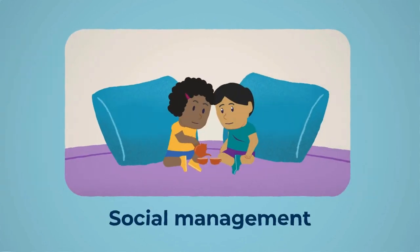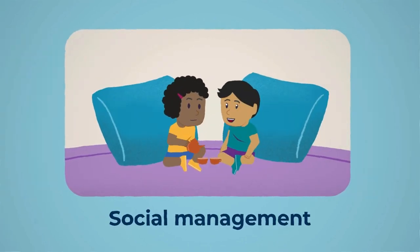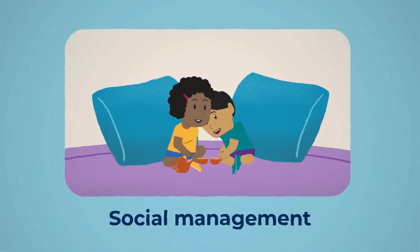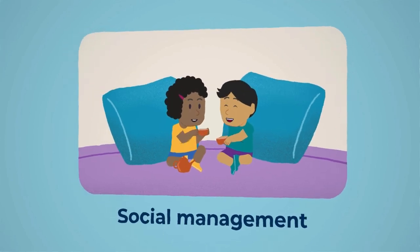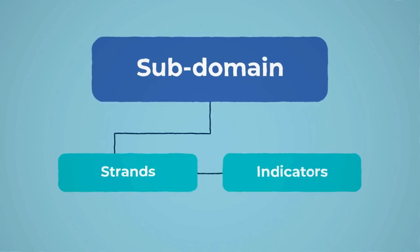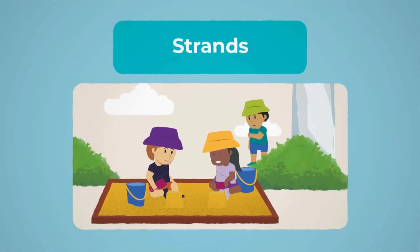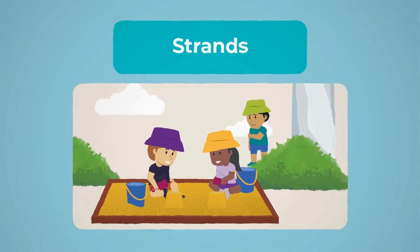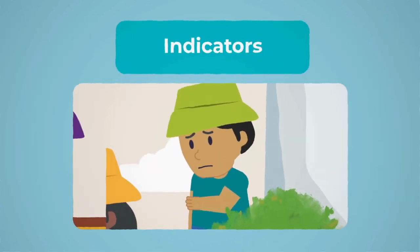Social management is where children interact effectively and respectfully with others, using social strategies to collaborate and build positive relationships. Within each subdomain there are strands and indicators. Strands describe the capabilities that change as children learn and develop, and indicators describe the progress you may observe.